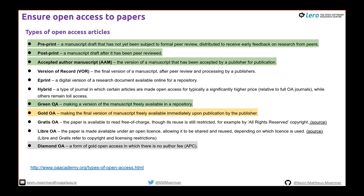Gold open access means you pay to make the final published version freely available immediately upon publication. Diamond open access — like the Journal of Open Source Software — is fully available with no author fee: free to read, free to publish, and fully open access. In my opinion, that's the best route — that's what it should be.